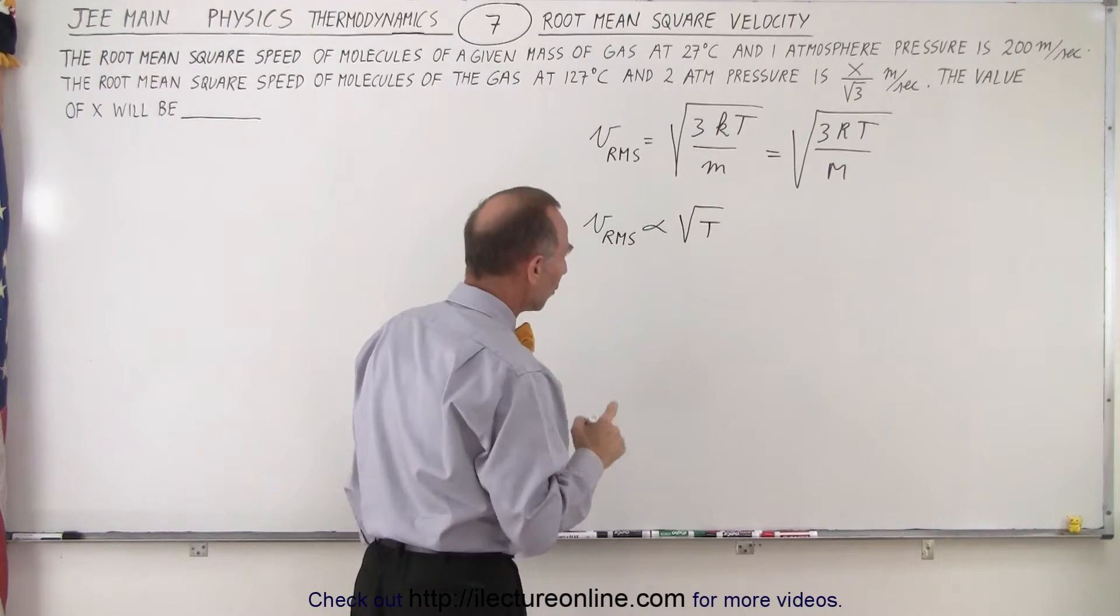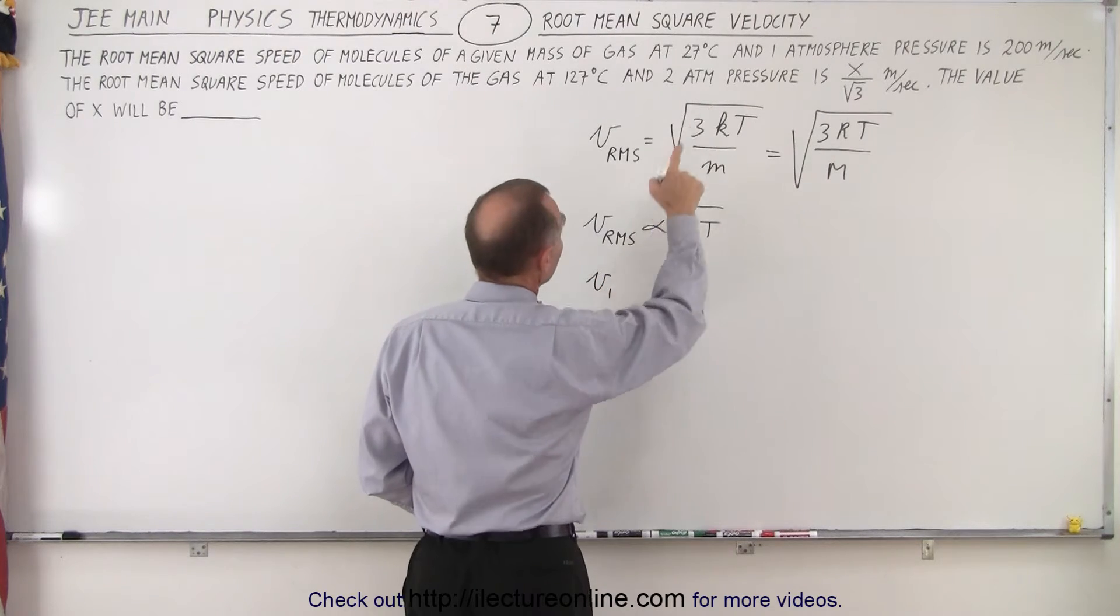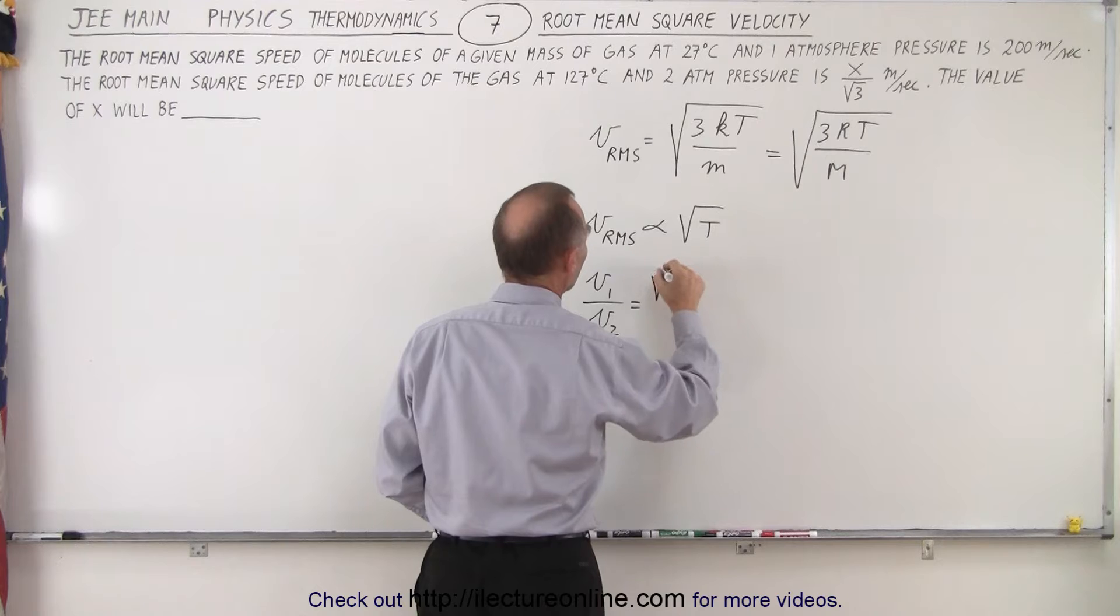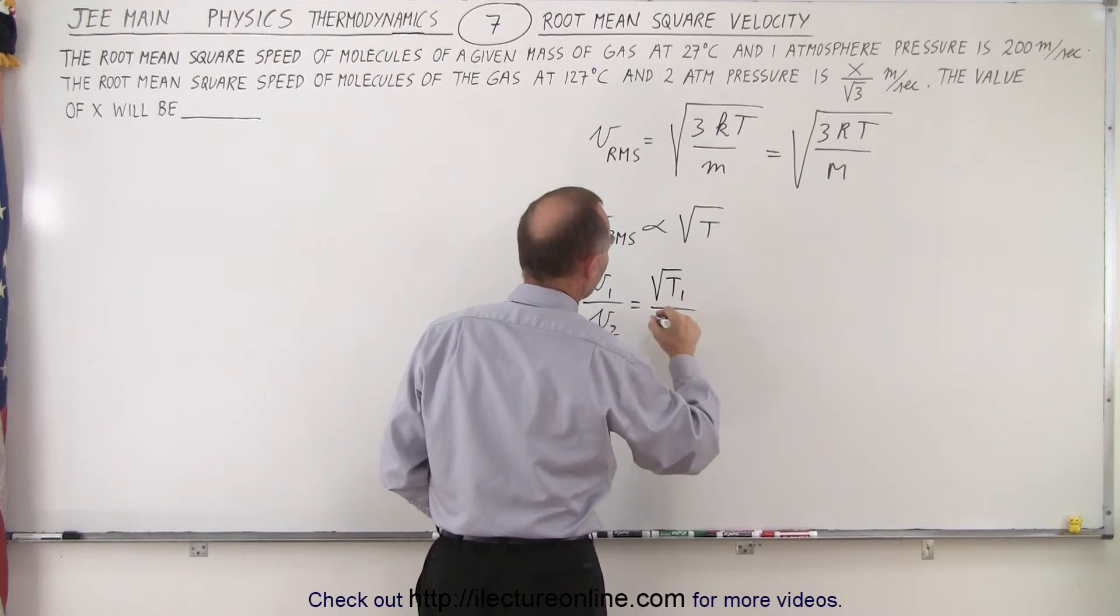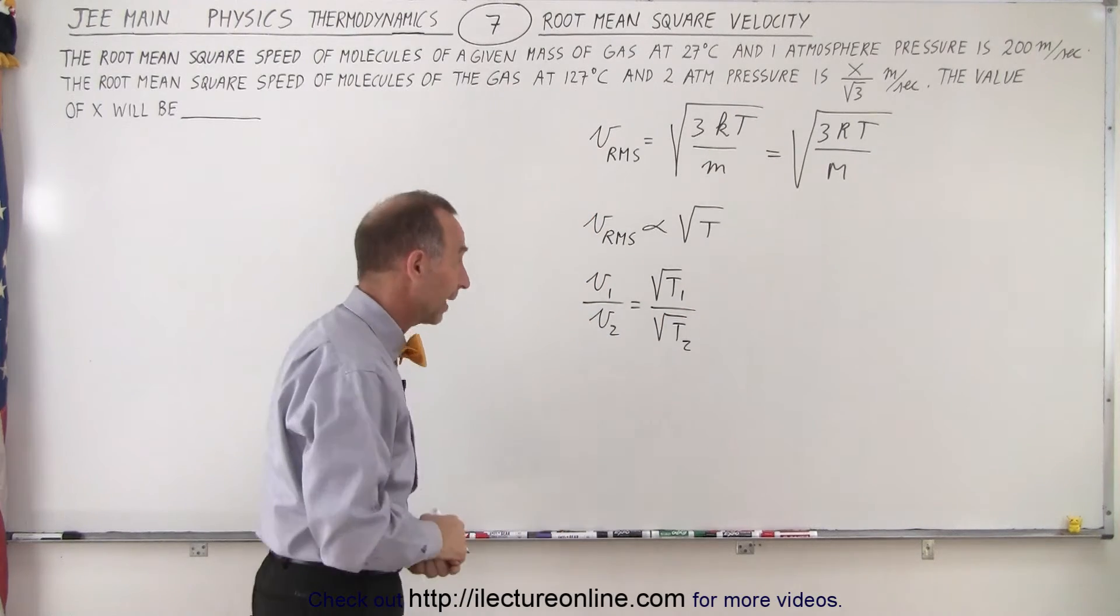which means we can then set up ratios. We can then say that V1, the initial velocity, over V2 is equal to the square root of T1 divided by the square root of T2. Since we have that proportionality, we can set up the ratios like that.